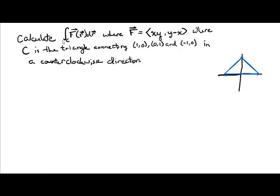In this problem, we're looking to calculate the line integral over the vector field ⟨xy, y-x⟩ over the path that is the triangle connecting (1,0), (0,1), and (-1,0) in a counterclockwise direction.